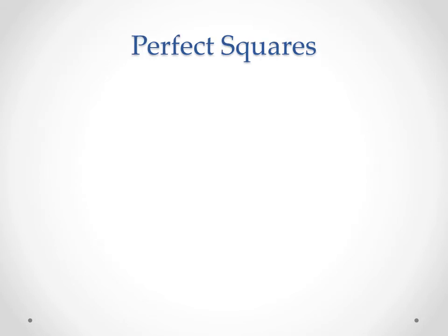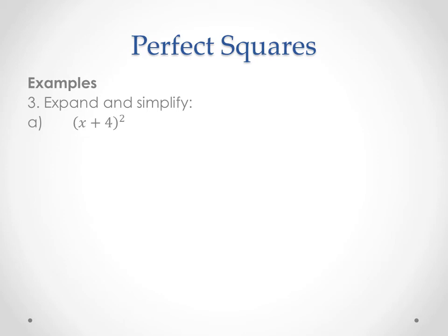One more special case — one more shortcut. This one's called perfect squares. Let's start with a couple of examples and see if we can figure out what the rule is going to be. This time instead of having two different binomials multiplied together, we're just squaring one binomial. And we know that squaring means multiplying the number by itself — exactly the same applies to binomials.